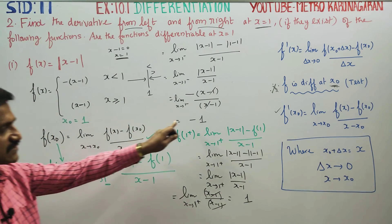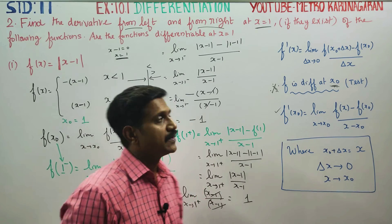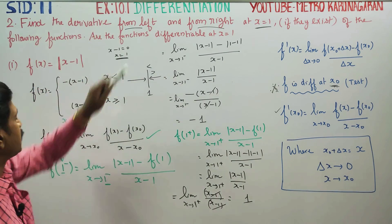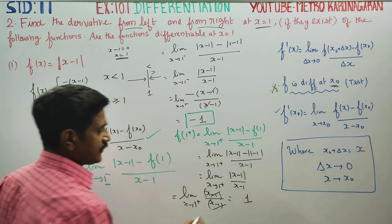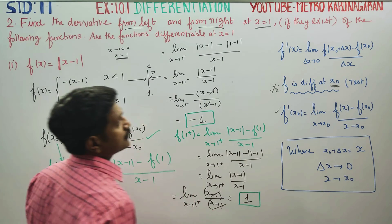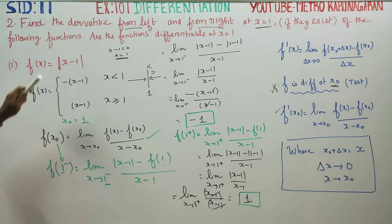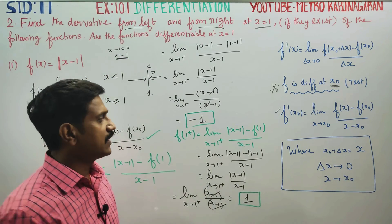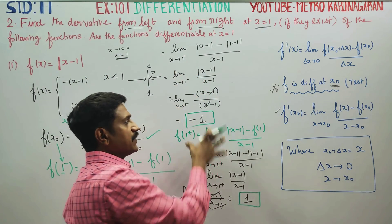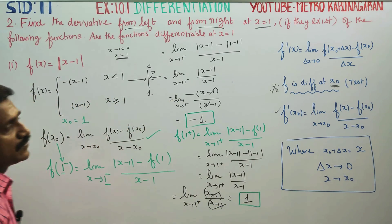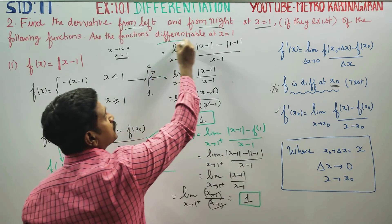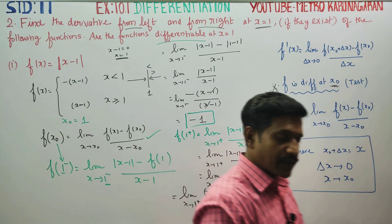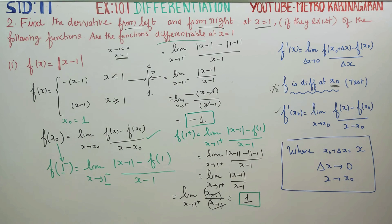Now we have two answers: the left-hand derivative is −1 and the right-hand derivative is +1. To check if the function is differentiable, we compare them. If the left-hand derivative equals the right-hand derivative, then the function is differentiable. If not, it is not differentiable. Since −1 ≠ +1, the function is not differentiable at x = 1.